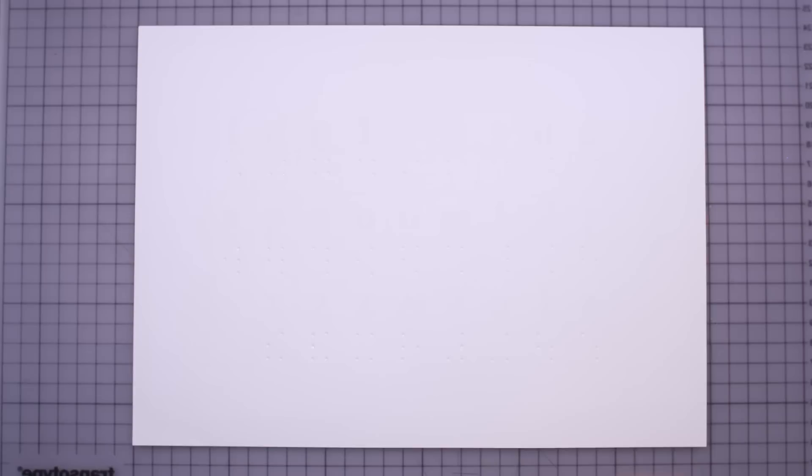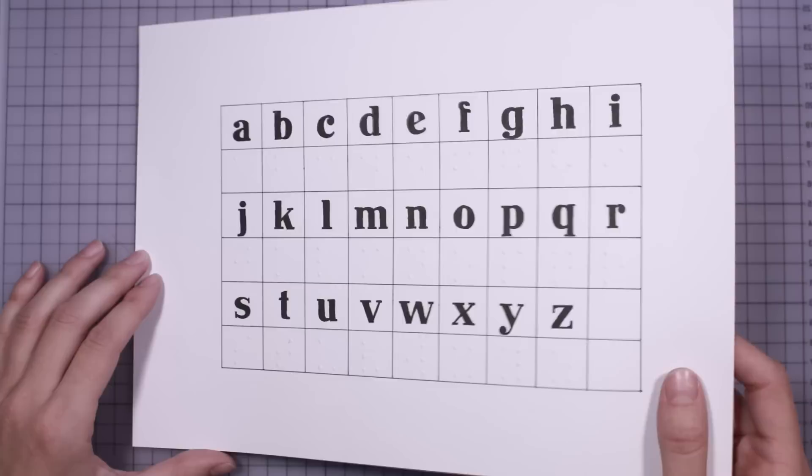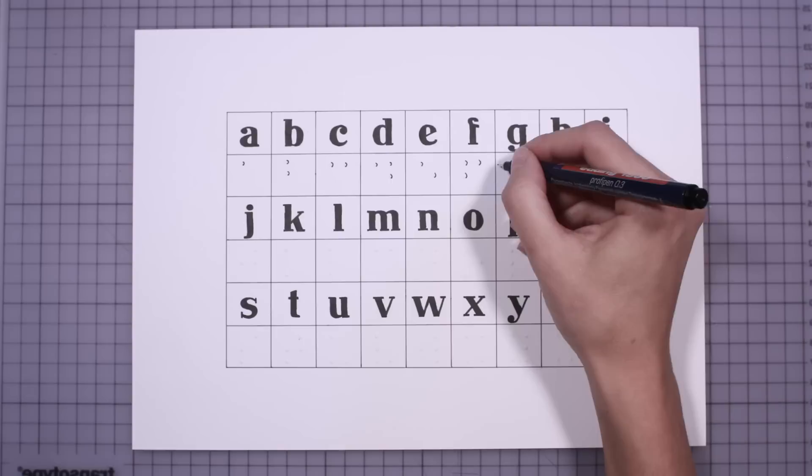There, a precocious teen by the name of Louis Braille does just that. Louis spends the next several years improving on Barbier's idea, creating an organized alphabet fitting into a six-dot standardized cell.